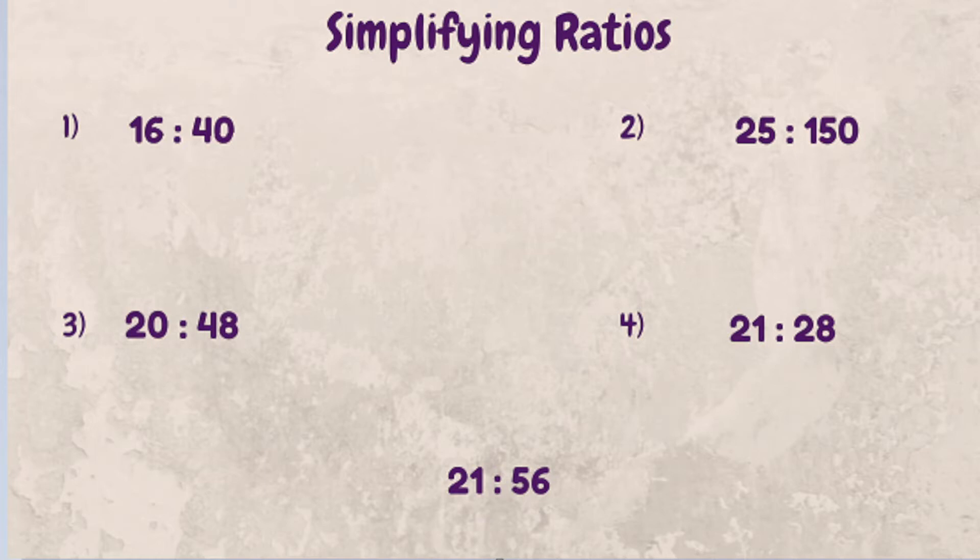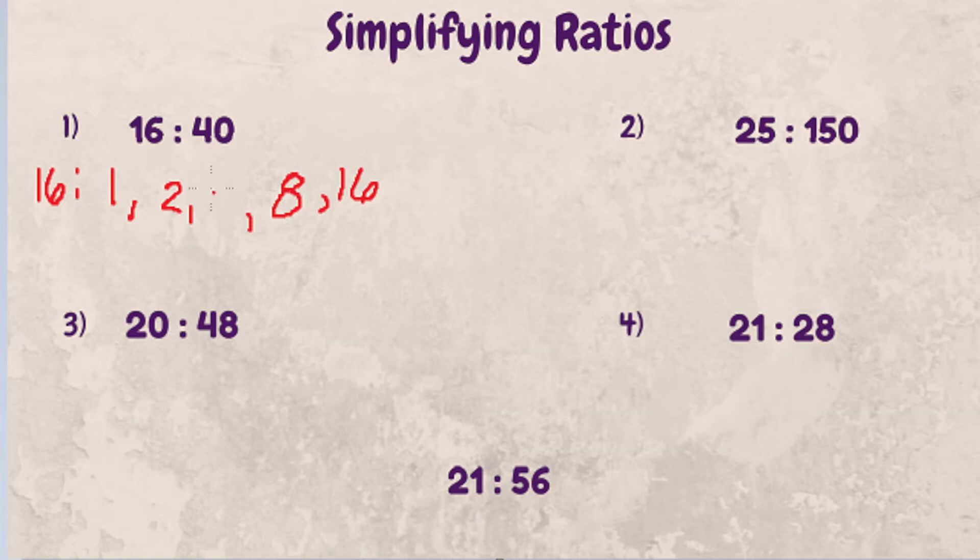So let's get started with example number one. The ratio is 16 to 40. The first thing you want to do is find all the factors of 16, and that's going to be what are all the numbers that you can multiply together to come up with 16. We have 1 times 16, we have 2 times 8, and then there's 4 times 4.